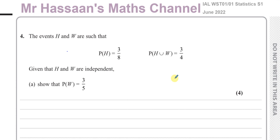In many questions in probability we get in S1, we have absolutely no idea what the event H and the event W actually stand for. We're just given this question about probability in its notation form. We do have to understand the notation of probability to answer such questions — it's not just a case of using common sense. We have no idea what these events stand for.